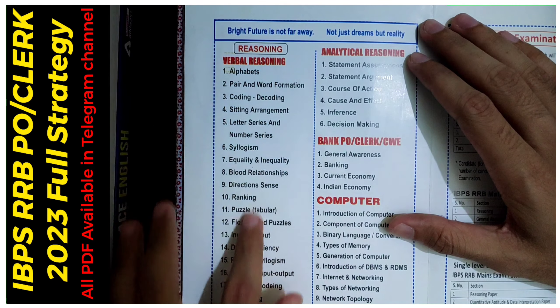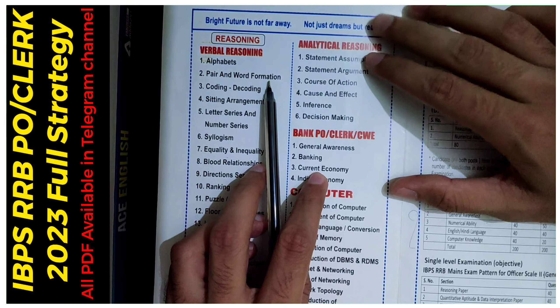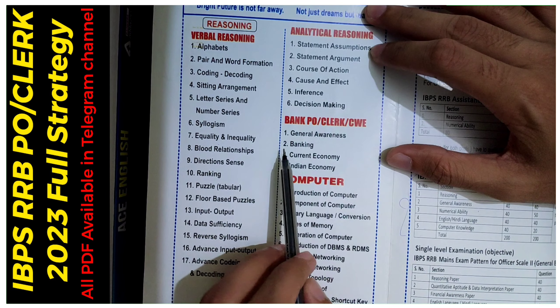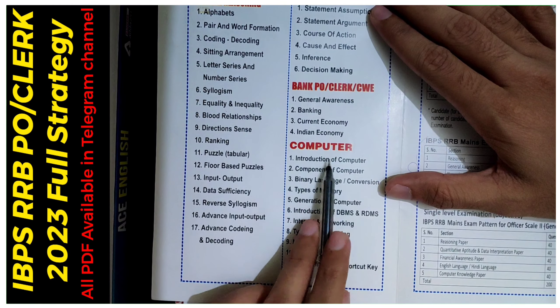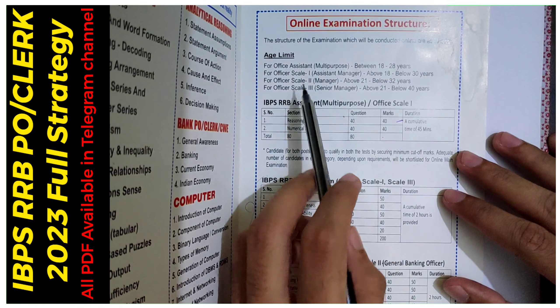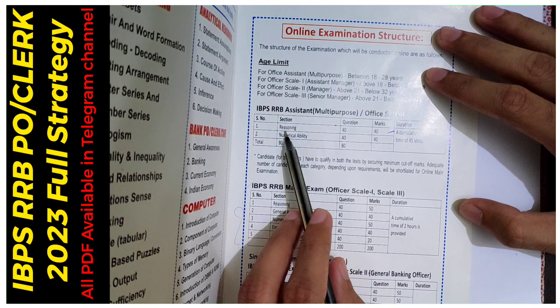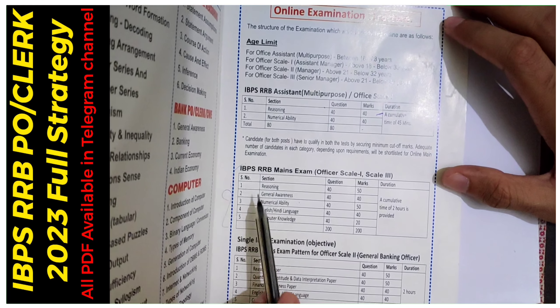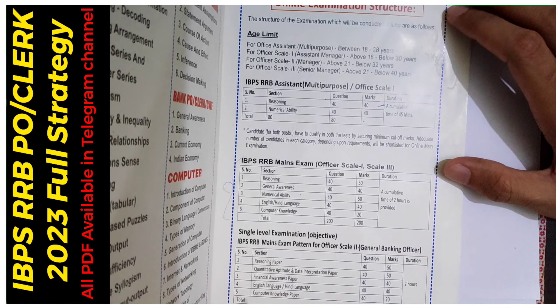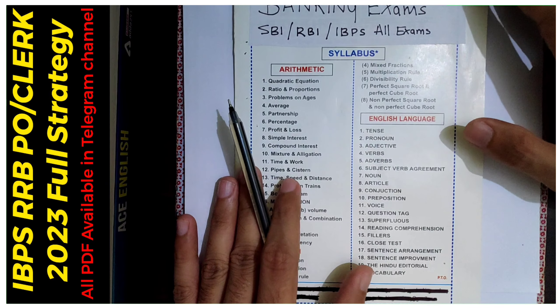Then reasoning is the syllabus — all topics including analytical reasoning. Then general awareness covers banking awareness, current affairs, Indian economy, and more. Computer syllabus is also there. You can see the pattern for RRB as well: reasoning and numerical ability, 40-40 questions and 40-40 marks for prelims. The mains syllabus is the same as the other exams.